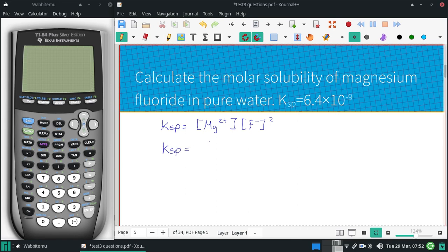In terms of our molar solubility, for every magnesium fluoride, there would be 1 magnesium and 2 fluorines, and we'll bring that 2 down.